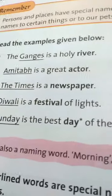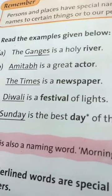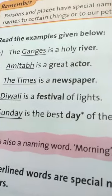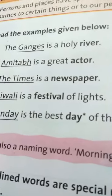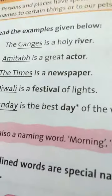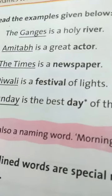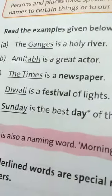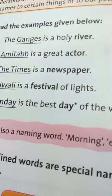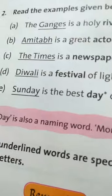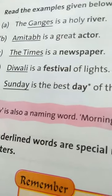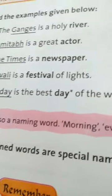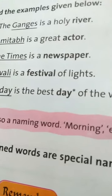Look at these sentences. The Ganges is a holy river. Here you can see that the Ganges means it is underlined and river is in bold letter. It means river is a noun but it is common noun, and the Ganges is proper noun. It means special naming word. Amitabh is a great actor. Amitabh is a special name for an actor. Actor is a common name. The Times is a special name for newspaper. The Times is a newspaper.